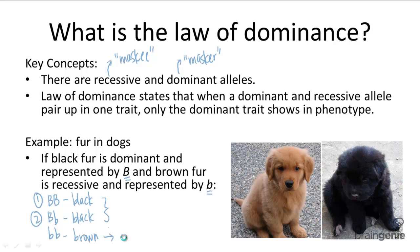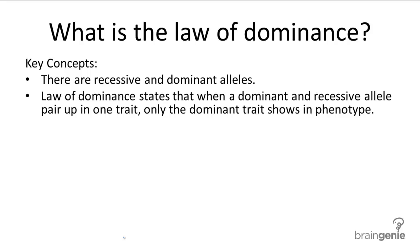Let's try another example. If Amy inherits a blue eye allele, or little b, from her mother, and a brown eye allele, or big B, from her father, what color eyes will she have? Amy's genotype is Bb. And because we know brown is the dominant trait, and the law of dominance states that only the dominant trait will show in the phenotype, Amy will have brown eyes. Law of dominance.